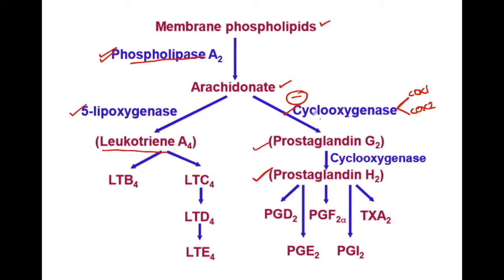When NSAIDs inhibit the cyclooxygenase, they inhibit the production of prostaglandins. These NSAIDs can be of two types: non-selective COX inhibitors, when they act on both COX-1 and COX-2, or selective COX-2 inhibitors.